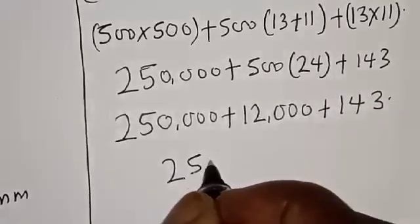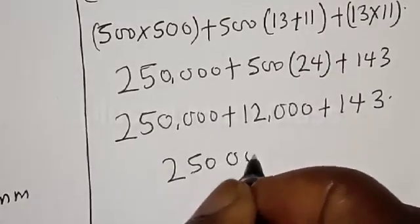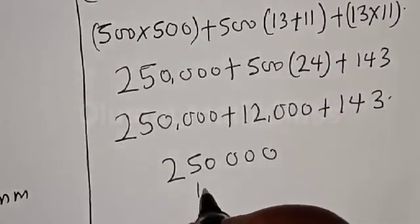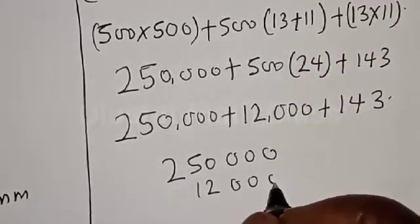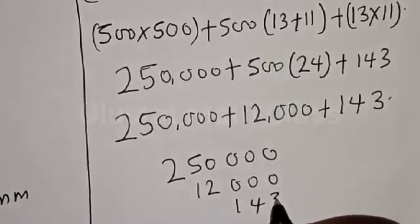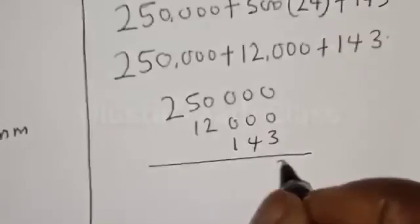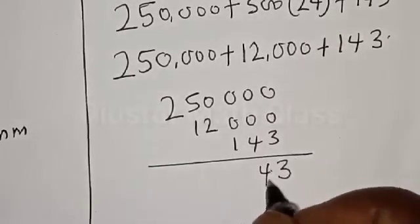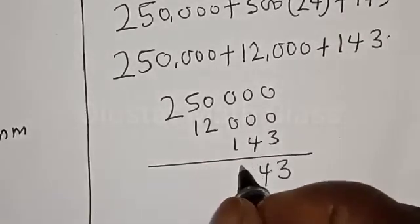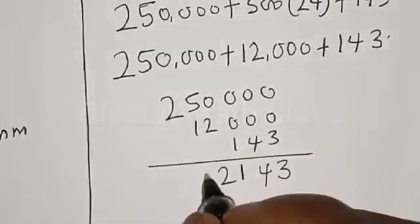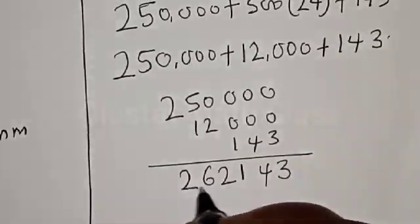We have 250,000, then 12,000, then 143. We have 3 plus 0, that is 3. 4 plus 0, 4. 1 plus 0, that is 1. Then we have 2 and here is 6 and here is 2.